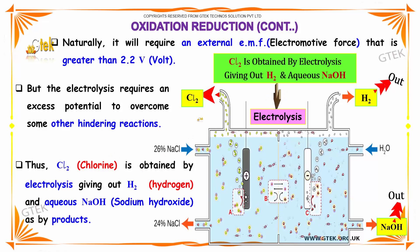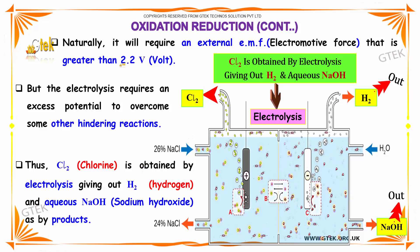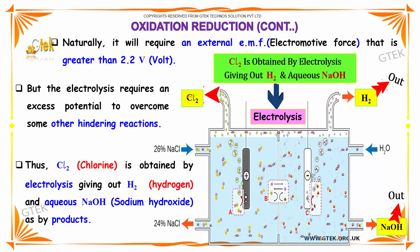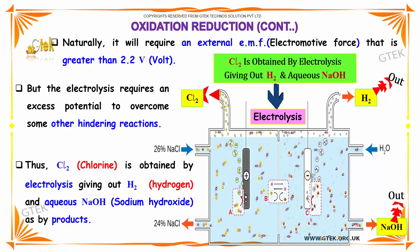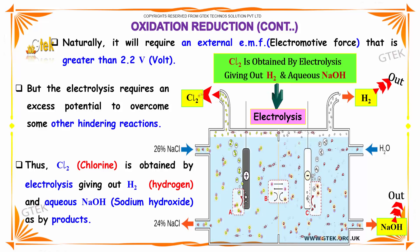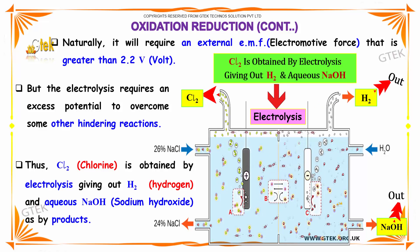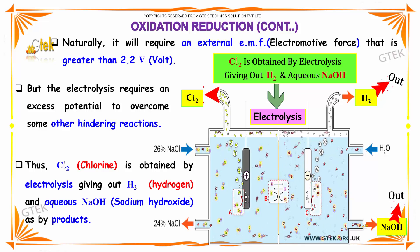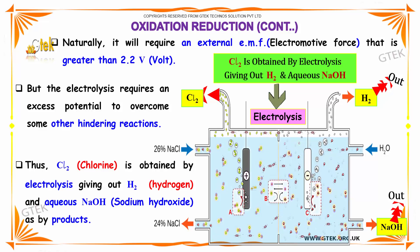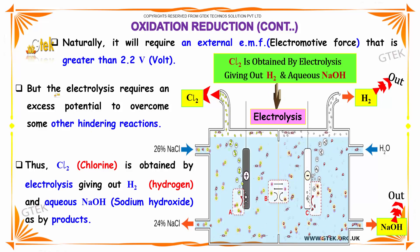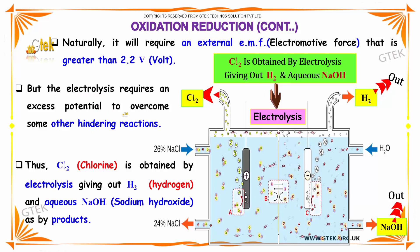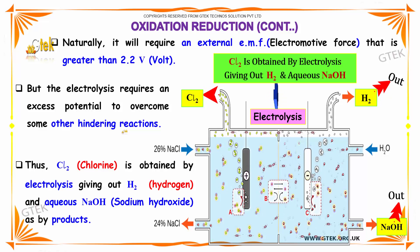Naturally, it will require an external EMF greater than 2.2 volts. Chlorine is obtained by electrolysis, giving out hydrogen and aqueous sodium hydroxide as byproducts.